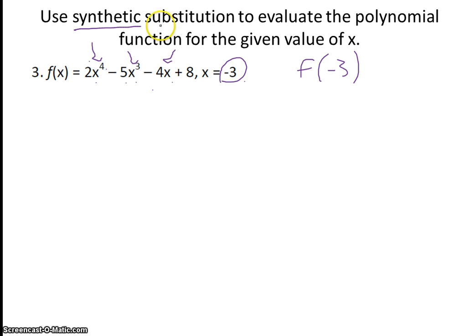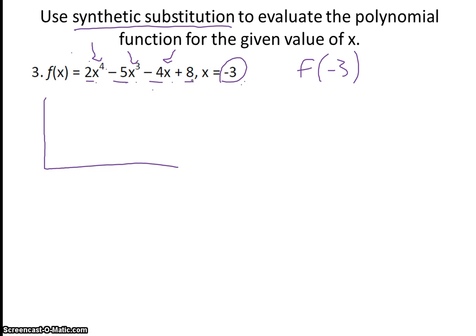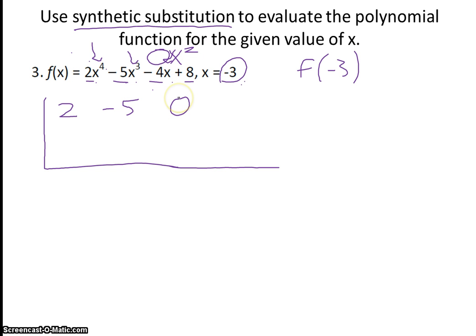Synthetic substitution is an alternative to directly plugging in negative 3 into our function. What we're going to do is draw a little L, and put all of the coefficients — including the negatives — in the top row. So I have a 2, then a negative 5. Notice that I don't have an x squared term, so it's like 0x squared — I have to put a placeholder of 0. Then I have negative 4, and then 8.